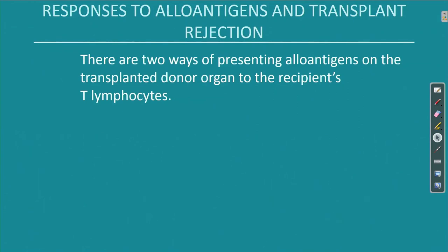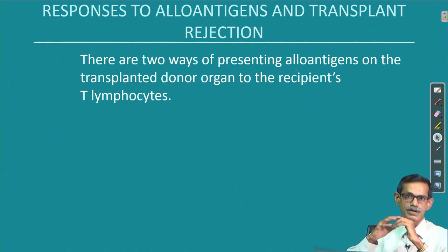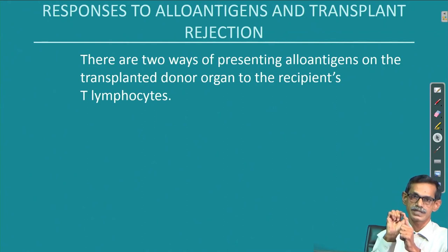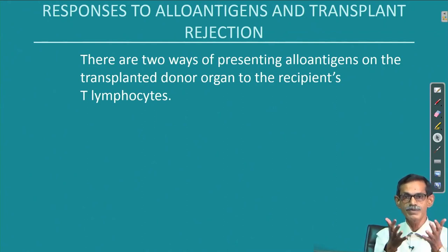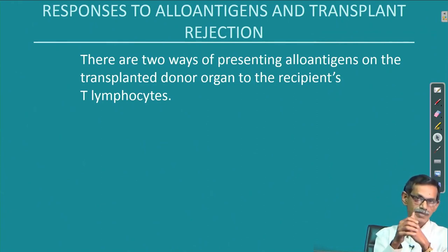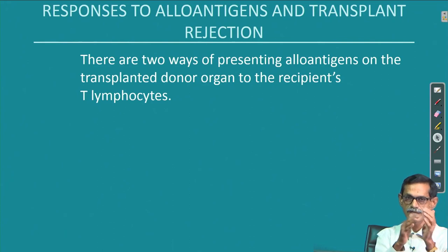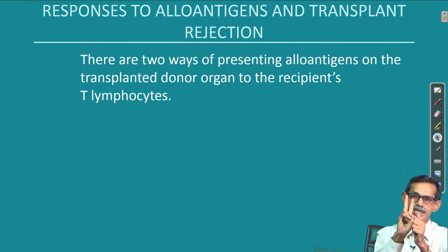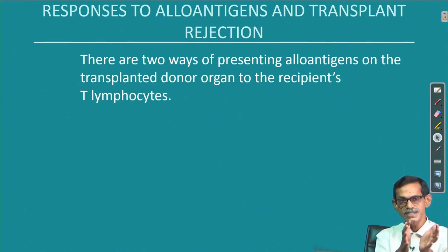In continuation to the previous lecture, we are always talking about alloantigen and alloreactive T cells. How are these alloantigens presented, or how does the recipient cell or the donor understand? There are two ways of presenting alloantigen from the transplant donor organ to the recipient T lymphocytes, because what happens with minor antigens, or if the donor is widely different genetically. Normally identical MHC is not possible in the human system except in identical twins; most cases it is different. Alloantigen recognition is very common, and it can be recognized in two ways — the T cell is the one recognizing.